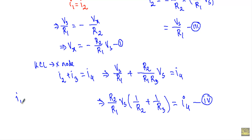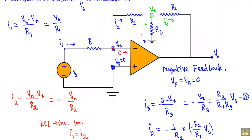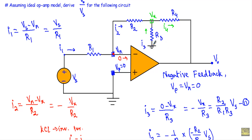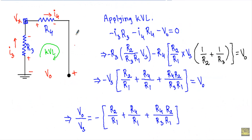Now I know the values of I1, I2, I3, and I4, so it will be convenient to calculate the output voltage. I will apply KVL in this loop — from the ground terminal to terminal X to the output — in the clockwise direction. Vx has a positive terminal on one side and negative on the other. Encountering R3 first (positive terminal first, then negative), its voltage is minus I3 R3. Then encountering R4 (positive terminal first, negative later), its voltage is minus I4 R4.